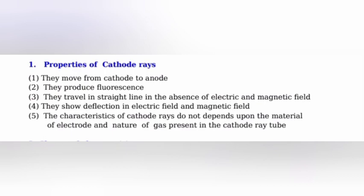Properties of cathode rays: They move from cathode to anode. They produce fluorescence. They travel in straight line in the absence of electric and magnetic field. They show deflection in electric field and magnetic field. The characteristics of cathode rays do not depend upon the material of electrode and nature of gas present in the cathode ray tube.